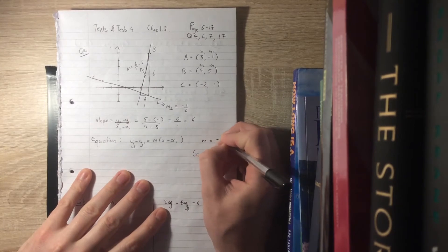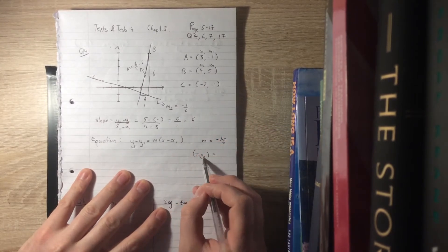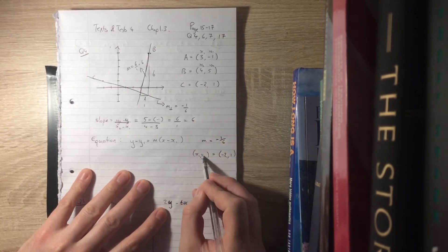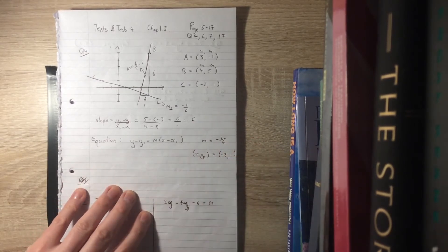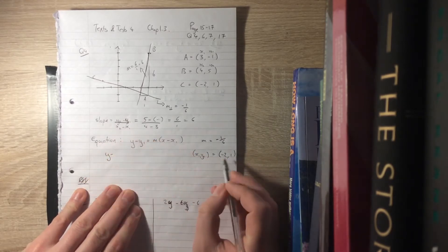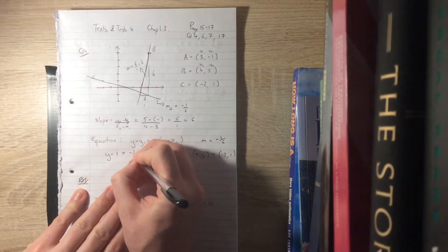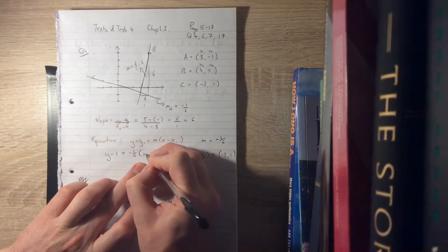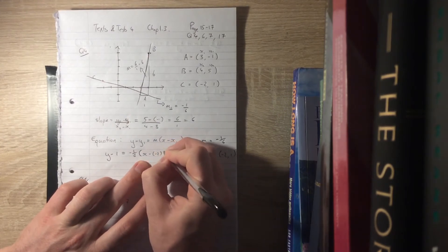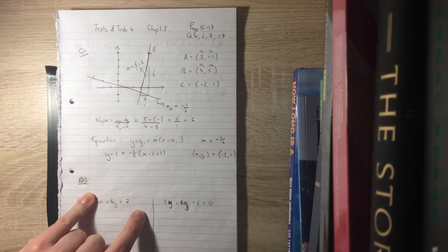So the equation of that line, with slope minus 1 over 6 going through point C which is (−2, 1) — that's your x₁, y₁ — you're going to use your equation of the line formula. So you say y minus y₁, which is 1, equals minus 1 sixth times x minus x₁, which is minus 2.